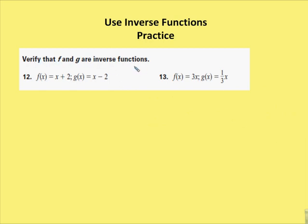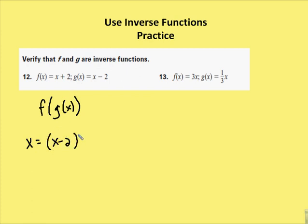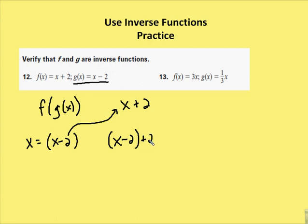Number 12: verify that f and g are inverse functions. We need to show that f(g(x)) = x and g(f(x)) = x. Given f(x) = x + 2 and g(x) = x − 2, let's find f(g(x)) first. We substitute g(x) = x − 2 in for x in f(x): we get (x − 2) + 2 = x. So f(g(x)) = x.